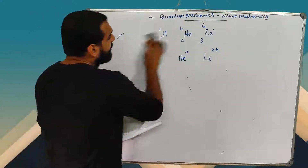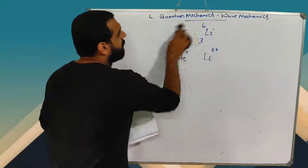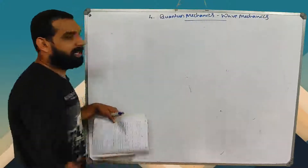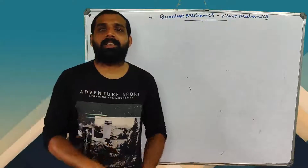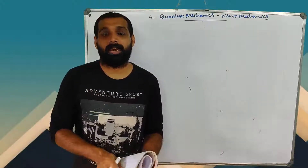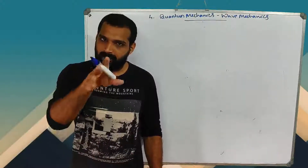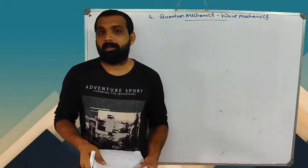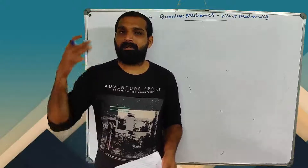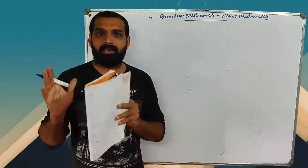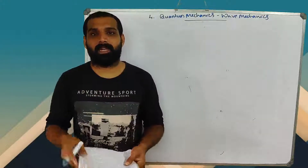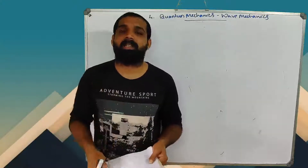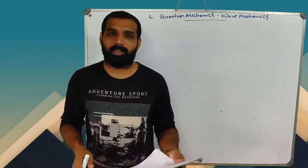Classical mechanics is an approximation of quantum mechanics. The correspondence principle states that when quantum numbers are increasing, quantum mechanics tends toward classical mechanics — quantum mechanics gives classical results at high quantum numbers.